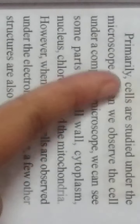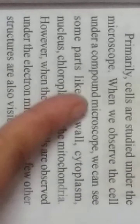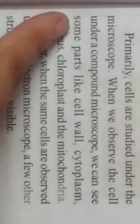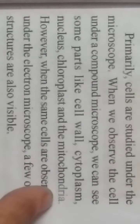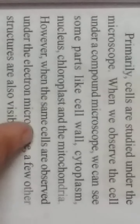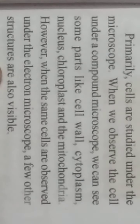Primarily, cells are studied under the microscope. When we observe a cell under a compound microscope, we can see parts like cell wall, cytoplasm, nucleus, chloroplast, and mitochondria. However, when the same cells are observed under the electron microscope, a few other structures are also visible. To study various cells, scientists have been trying to observe cells from different parts of plants and animals, draw the structures, take photographs of them, and make models of them.